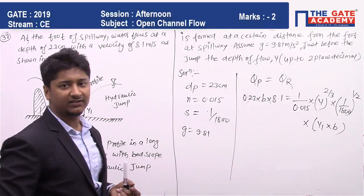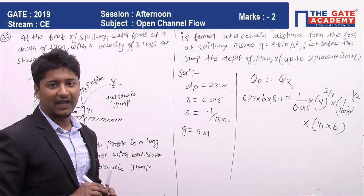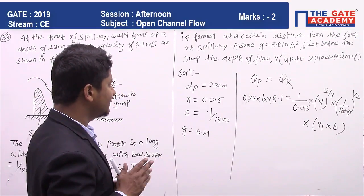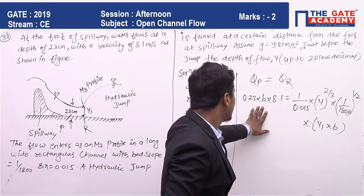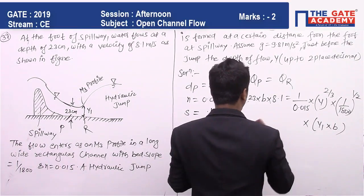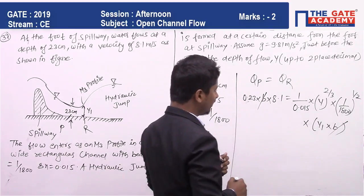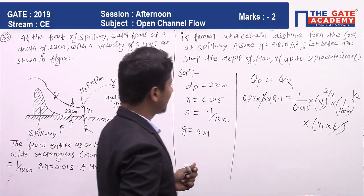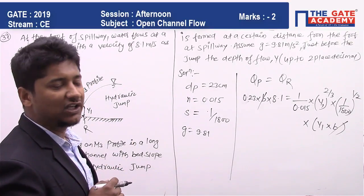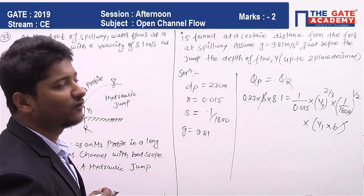Y1 is the depth at that point that we have to find out, and B is not given. B appears on both sides, so we can cancel it out. The only unknown value in this equation is Y1.